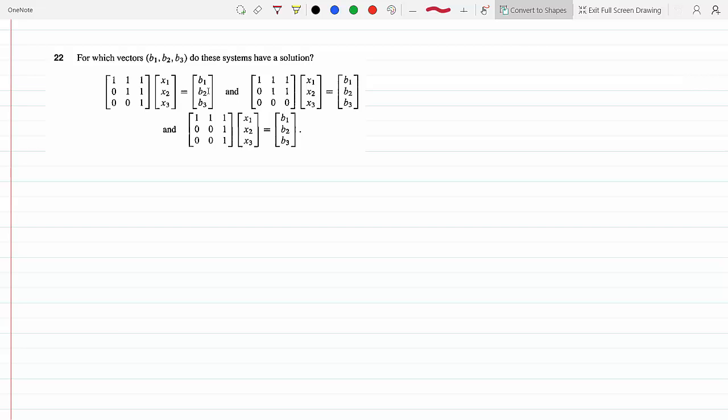And therefore the column space is R³. So for this first system here, the column space is R³.